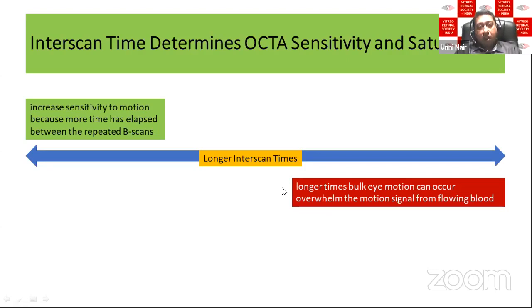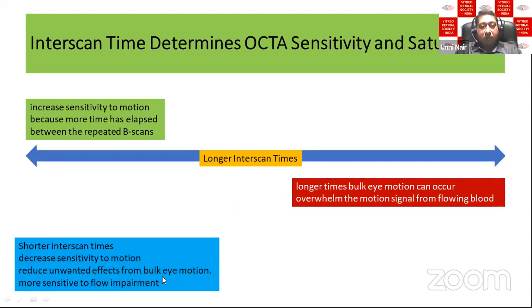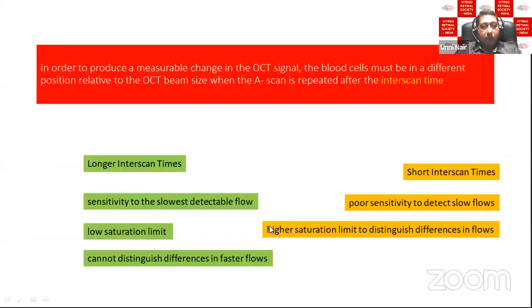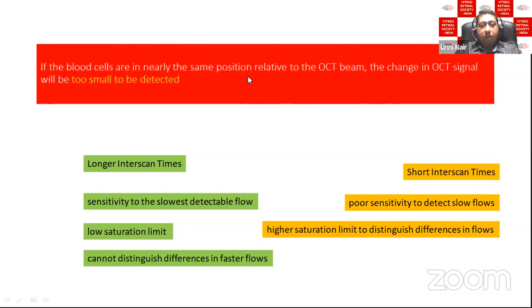A shorter inter-scan time has decreased sensitivity but fewer bulk eye motion artifacts. Newer concepts like VISTA — variable inter-scan time — allow varying the inter-scan time between fast or longer scans. The blood cells should have moved sufficiently to be detected; if the blood has barely moved within a very short inter-scan time the movement won't be detected. There are two concepts: sensitivity increases with longer time, but faster flows may go undetected at longer inter-scan times.